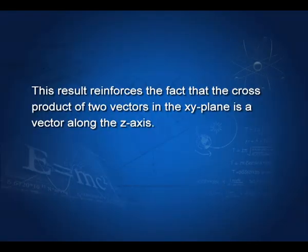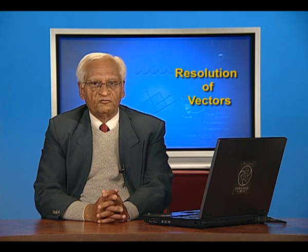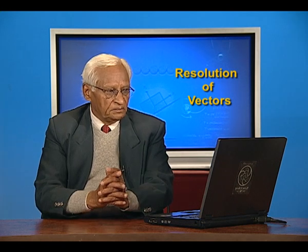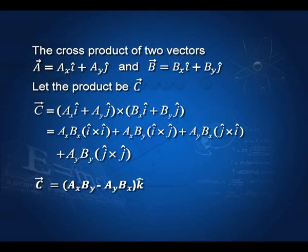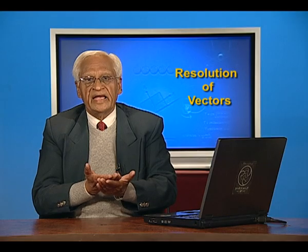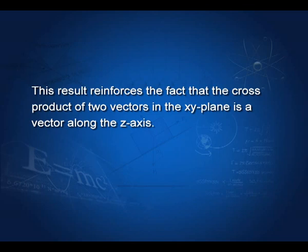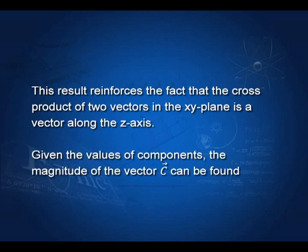Please remember this: if the vectors are in the x-y plane, their cross product has to be in the z direction, either positive or negative. Since this will be used very often, it is a very important concept. The cross product of A equals A x i-cap plus A y j-cap and B equals B x i-cap plus B y j-cap gives a result along the k direction, and given the component values you can find the magnitude of C.